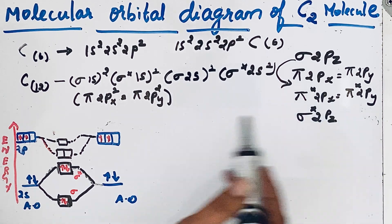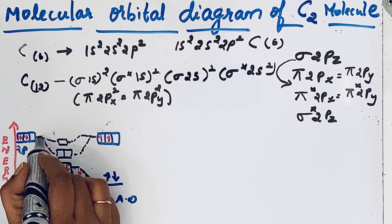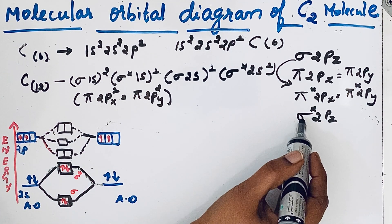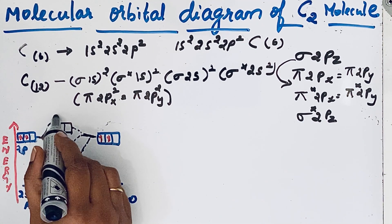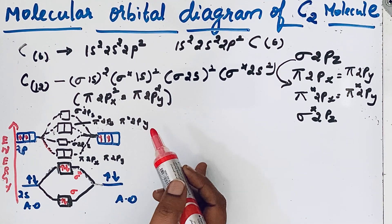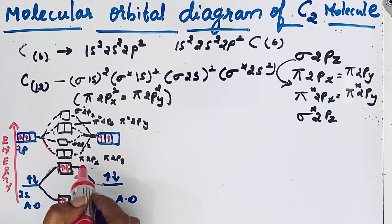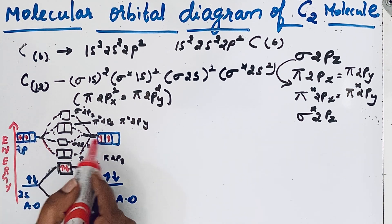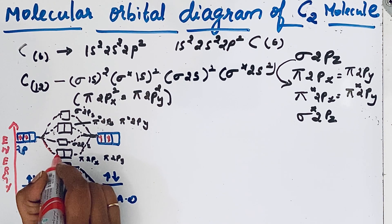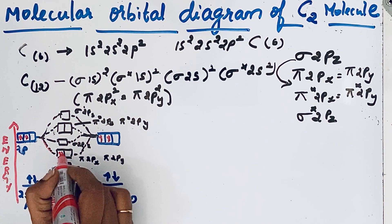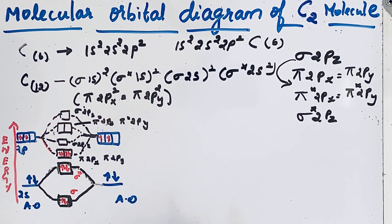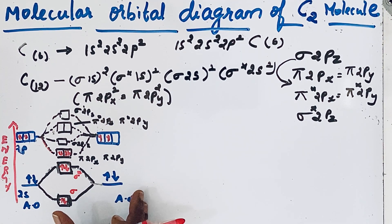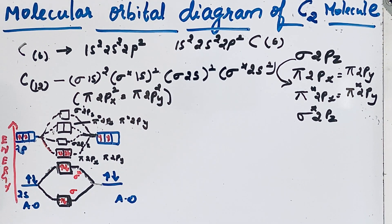Electrons first enter the low energy pi 2px and pi 2py orbitals. We have four electrons in the 2p orbital — two electrons go into pi 2px and two electrons go into pi 2py. Using this molecular orbital configuration, we can find the bond order, stability of the molecule, and its magnetic property.